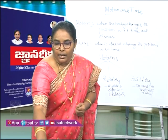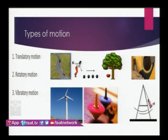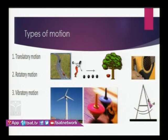Let us look at examples for these motions. Here you can see vehicles moving on the road — they are in translatory motion. A man is throwing a ball; the ball is moving in a straight line. When fruits fall from a tree, they too follow translatory motion. For rotatory motion, here you can see the blades of a windmill fan rotating about an axis.